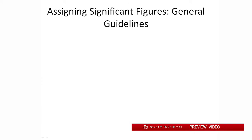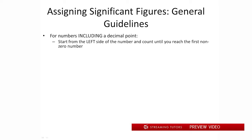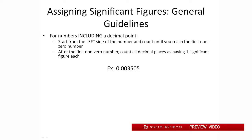Let's look at assigning significant figures in a more scientific way. There are two scenarios. The first is when a decimal point is present. When there's a decimal point, we start on the left of the number and eliminate the leading zeros until we reach our first non-zero integer, then we count significant figures. For example, take .003505 — starting on the left we see three zeros, so we eliminate those. Then we have our non-zero integers. The zero in the middle counts because it's between two non-zero integers. So we count one, two, three, four: this number has four significant figures.